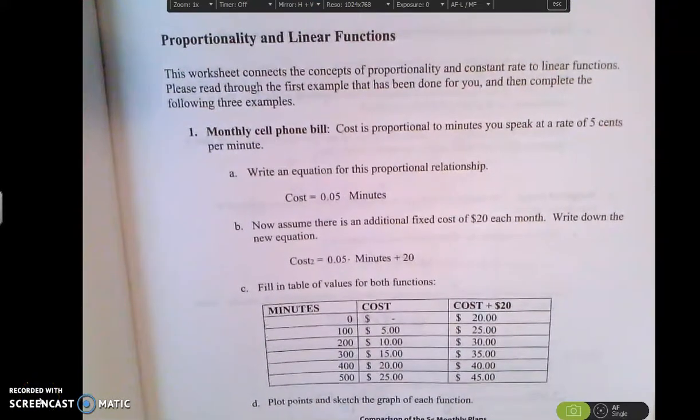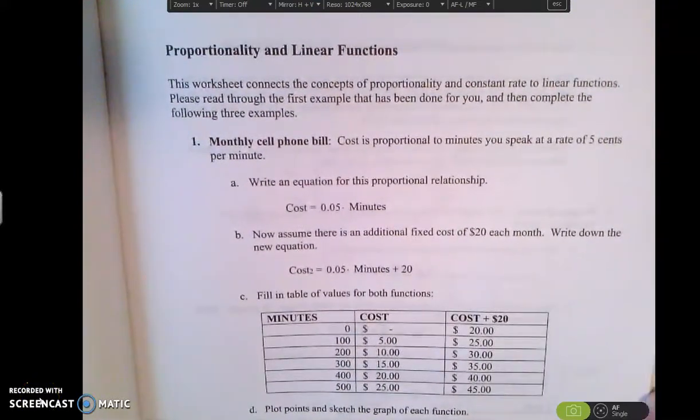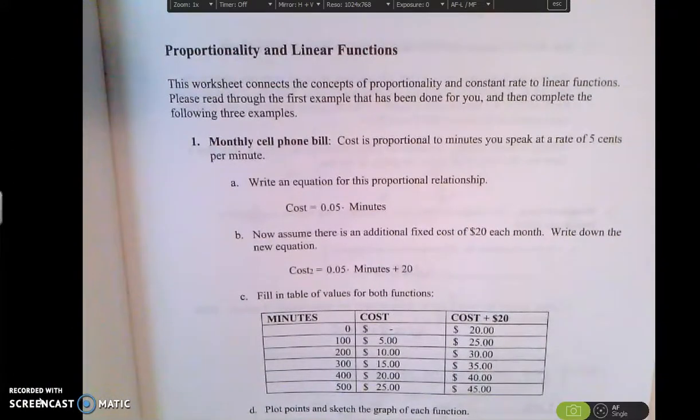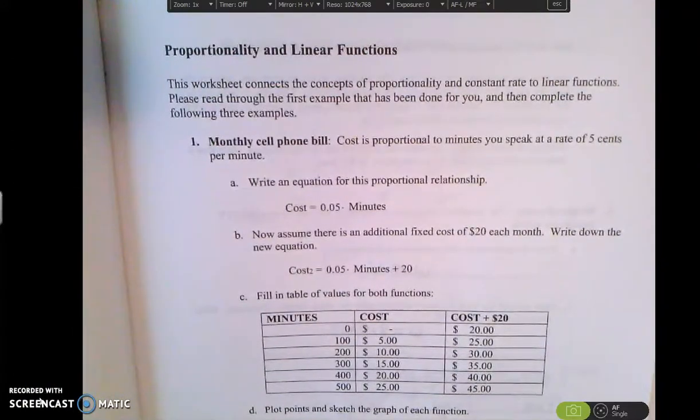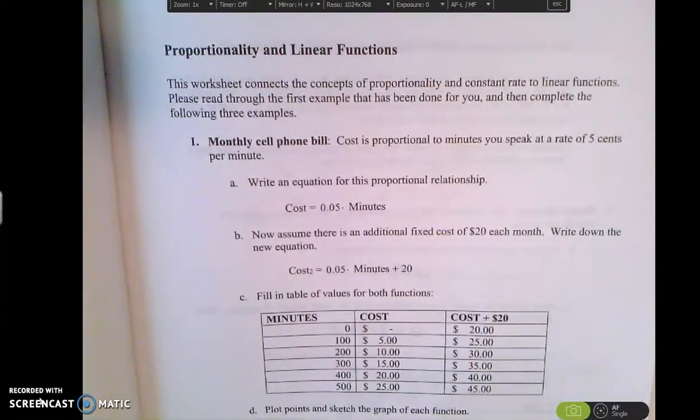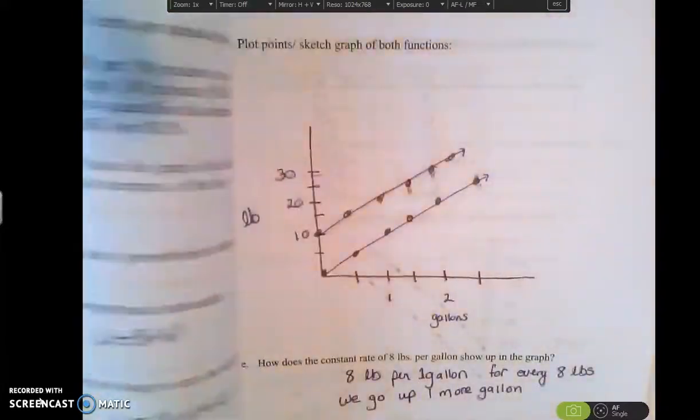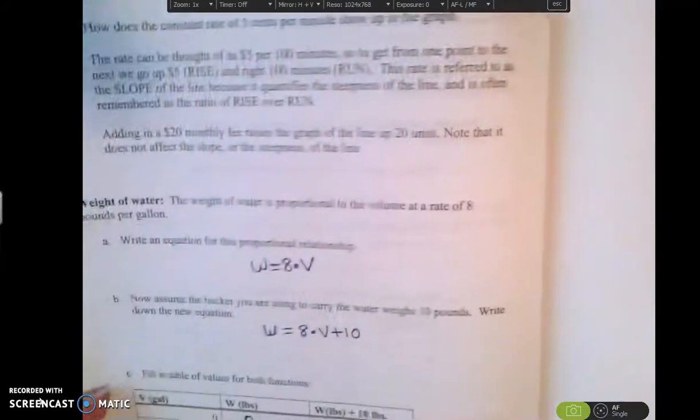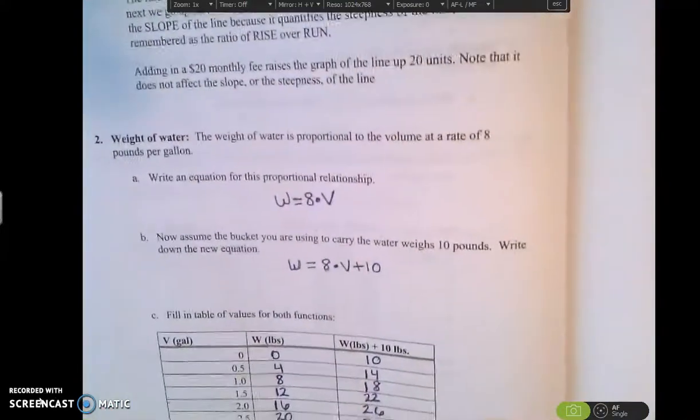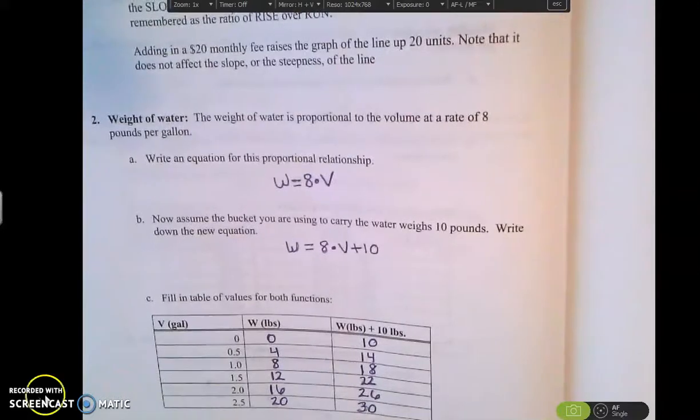Alright, we're going to look at page 55 through 60 in your guided workbook. First thing I would like for you to do is read over the example that's given to you on page 55 that's talking about minutes for cell phone calls and different things like that. I'd like you to read that over carefully and then we're going to just go to example two and talk about the answers for examples two and three.